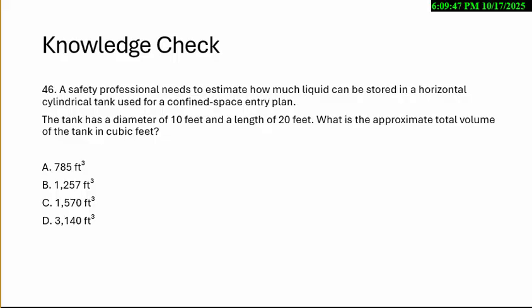A safety professional needs to estimate how much liquid can be stored in a horizontal cylindrical tank used for a confined space entry. You will get one form of this that may give you the quantity and ask you how high it's got to be. You just have to do this backwards and forwards. The tank has a diameter of 10 feet and a length of 20 feet. What's the approximate total volume in cubic feet? The options are 785, 1,257, 1,570, or 3,140 cubic feet.